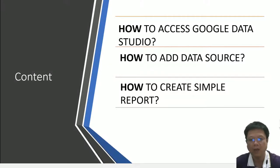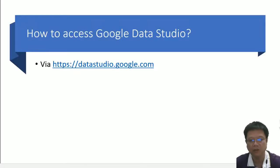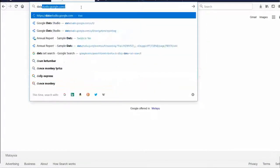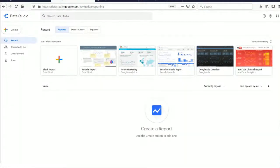To access Google Data Studio it is very simple — just open your browser and type the following URL: datastudio.google.com. Please make sure you have first logged in to your Google account.